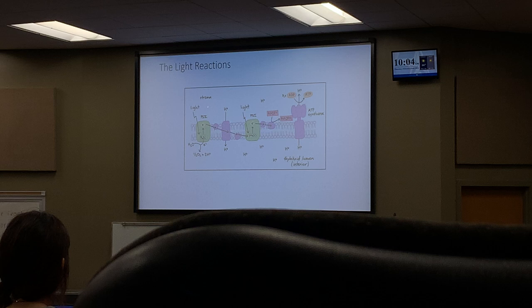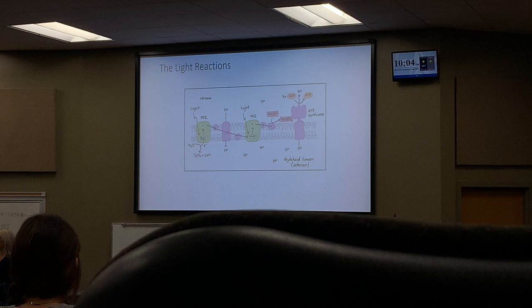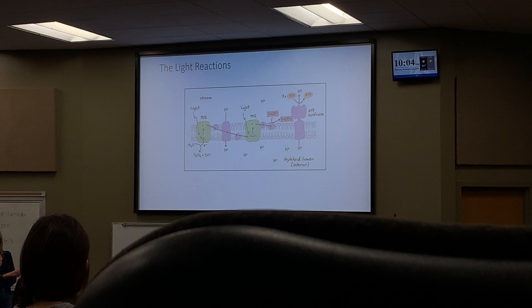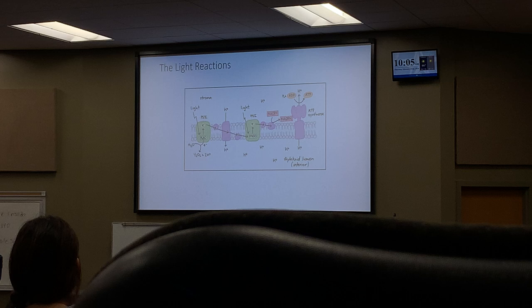The P700 and P680 labels refer to the wavelength of the pigments each photosystem receives. Photosystem 2 is very special because its electrons are energized by chlorophyll a, and then they will travel from photosystem 2 and end up at photosystem 1.